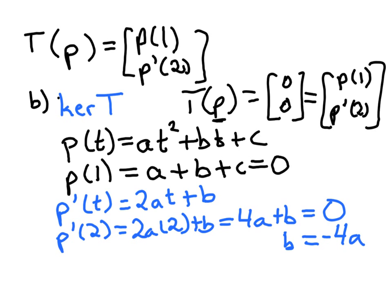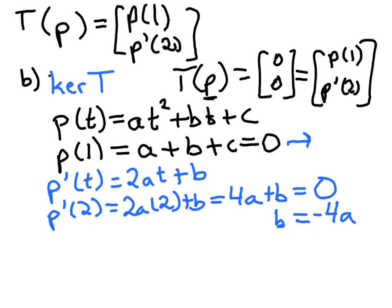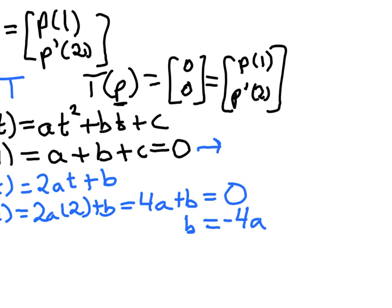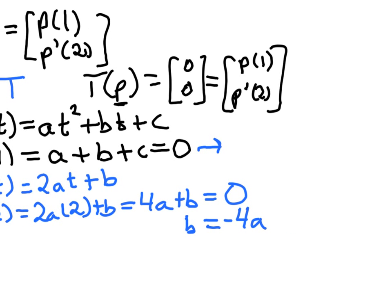Well, going back up to this equation here, going up to this a+b+c=0 equation, and now substituting, we have a plus b is -4a, plus c equals 0. So c is equal to 3a.